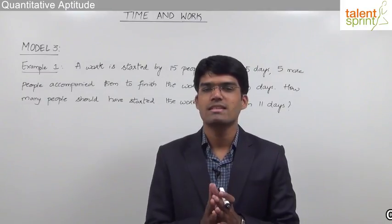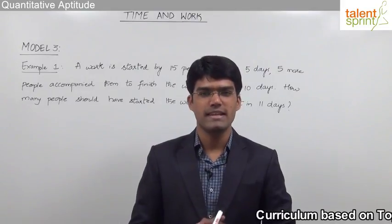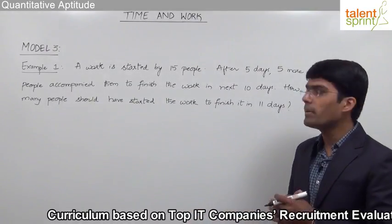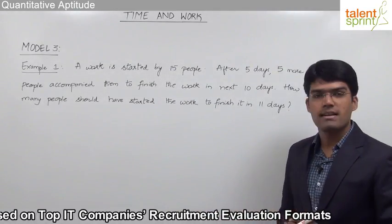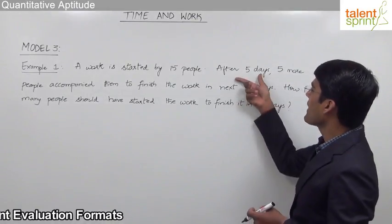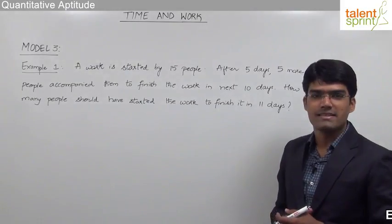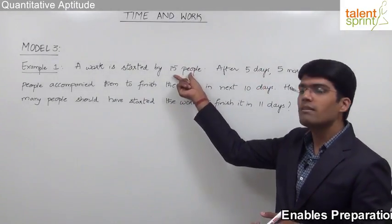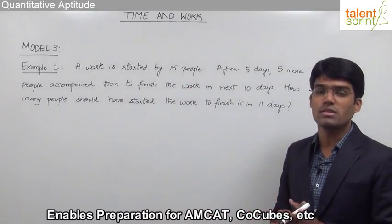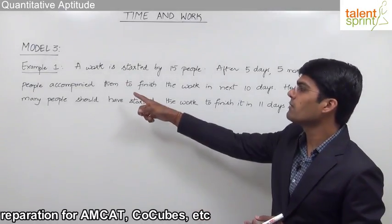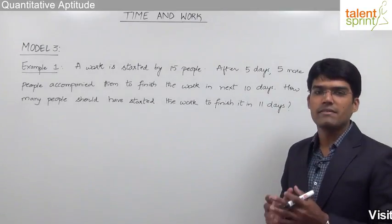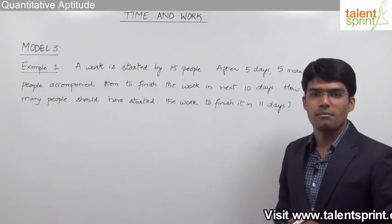Let us take an example based on measurement of work. A work is started by 15 people. After 5 days, 5 more people joined them to finish the work in the next 10 days. How many people should have started the work to finish it in 11 days? Initially 15 people worked; after 5 days, 5 more joined making 20 people, who finished the work in the next 10 days. We need to find how many people should have started to finish it in 11 days altogether.